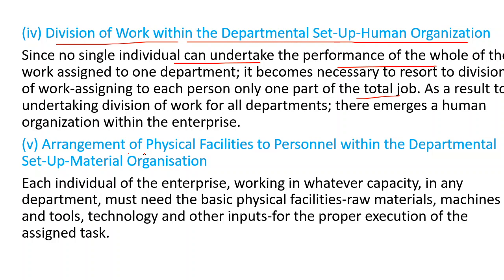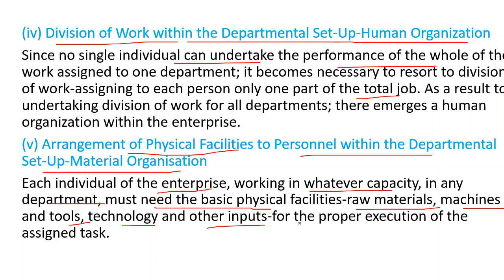The next step is arrangement of physical facilities for personnel within the departmental setup of the material organization. Each individual of the enterprise, working in whatever capacity in any department, must have the basic physical facilities — raw materials, machines, tools, technologies, and other inputs — for the proper execution of the assigned work, so that they can perform their work accordingly.